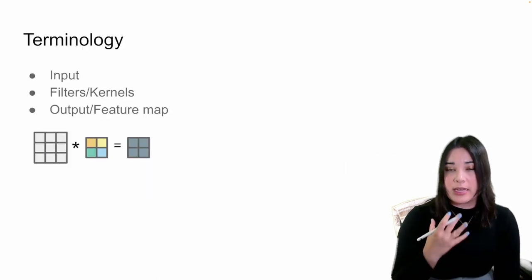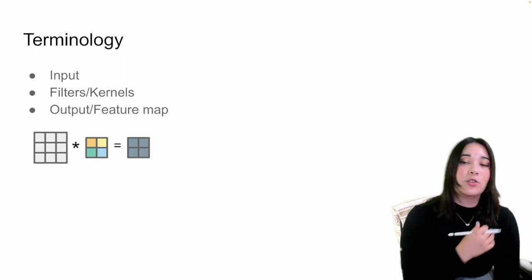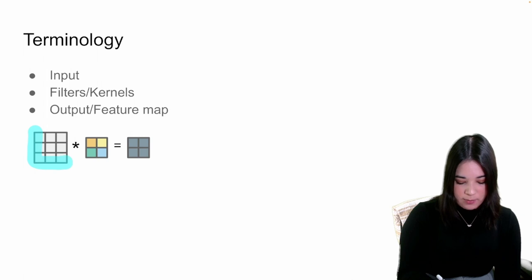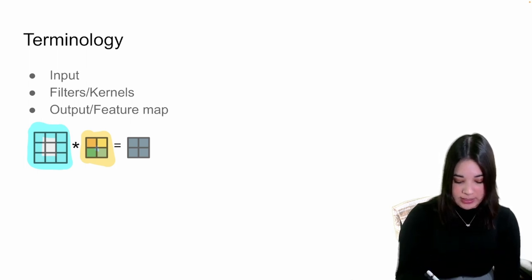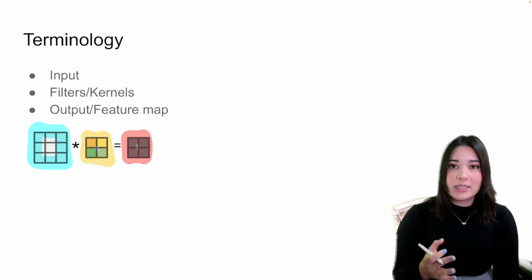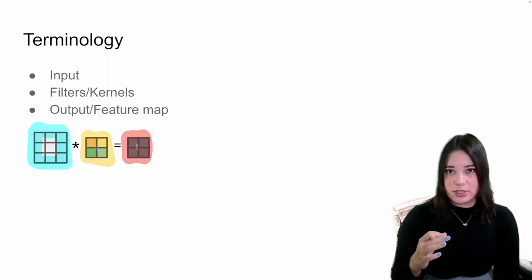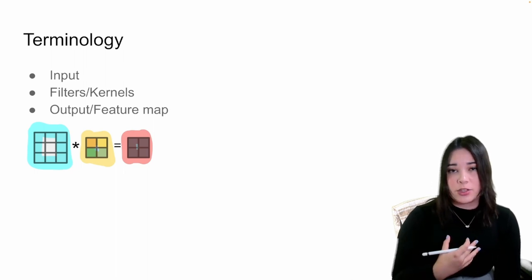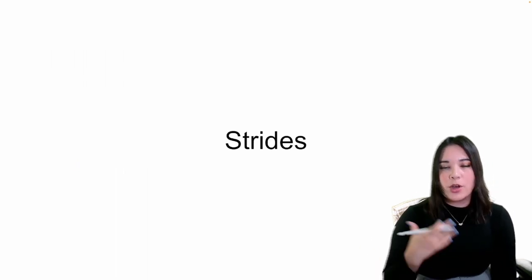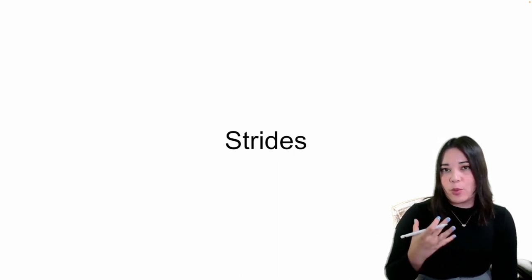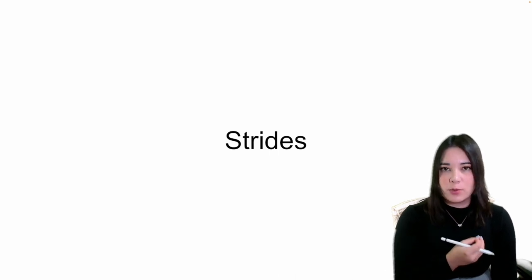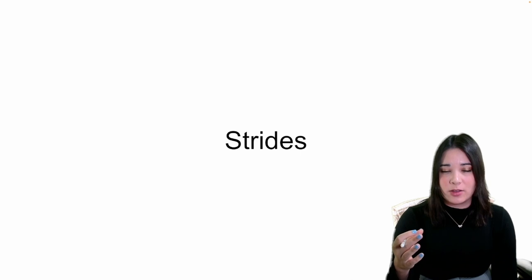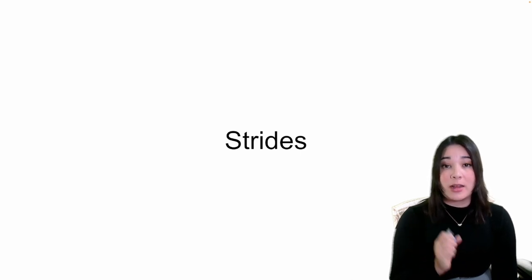Let's clarify some terminology. An image we're going to apply a filter to is called the input. The filter we apply is called either a filter or a kernel. When we apply a filter to an image, we get an output, also called a feature map — because the filters we slide across our images are supposed to learn features about the image. So far all of our convolutions have moved filters one pixel by one pixel, but we don't have to. Let's talk about strides.